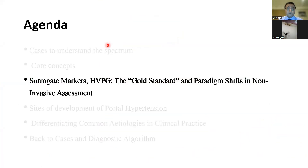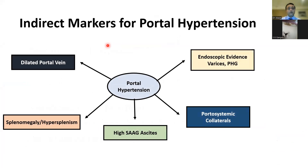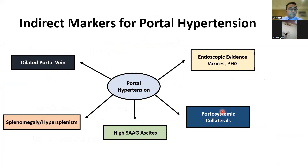How do we know that somebody has portal hypertension? Besides HVPG as a direct marker, there are indirect markers. Portal hypertension is suspected in anyone with a dilated portal vein greater than 1.3 cm, endoscopic evidence of varices or portal hypertensive gastropathy, presence of multiple portosystemic collaterals on imaging or clinically, high SAAG ascites — and I reinforce: not all ascites indicates portal hypertension. Only ascites with a SAAG ≥1.1 is indicative of portal hypertension in up to 97% of cases. Splenomegaly with hypersplenism and pancytopenia is also a feature.